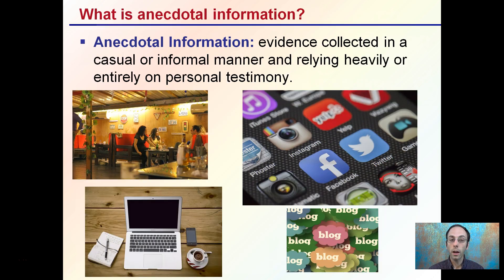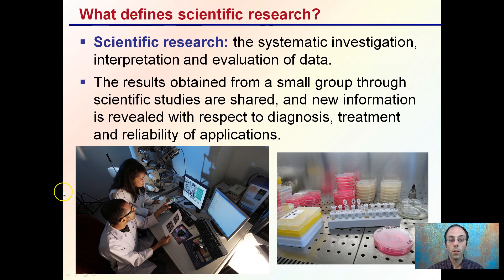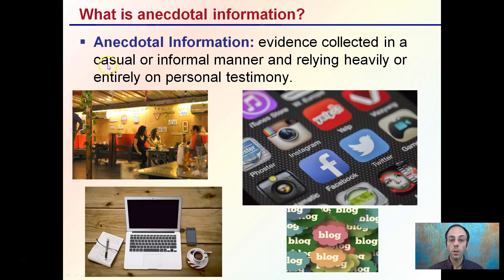In contrast, anecdotal information is evidence collected in a casual or informal manner, relying heavily or entirely on personal testimony. So stories you may hear, postings you may see, things you may read on a blog or just find on the internet from someone posting — that's anecdotal information. Going back to scientific research, there's also collaboration — typically a peer review process — where people in the field are able to compare and relate to what is found. Anecdotal information is just one person putting something out there and claiming it as truth.